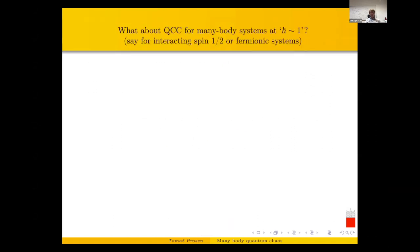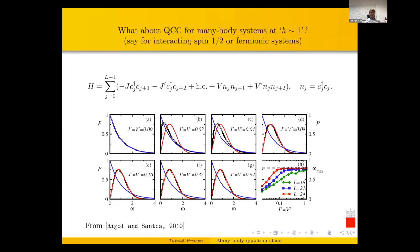My talk is about systems where there is no ℏ — fermionic or spin-one-half systems where you cannot even in principle think of a small or large parameter. The only parameter in this game is the system size — number of spins, number of fermions. Remarkably, people have found results — and I take this from a review paper by Marcos, Lagos, and Santos — that people actually understand random matrix behavior as a definition of quantum chaos for quantum many-body systems like one-dimensional spin chains.